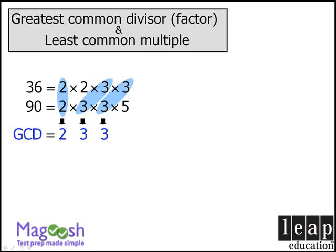So the greatest common divisor of 36 and 90 will be the product of the factors that they have in common. And this product equals 18.